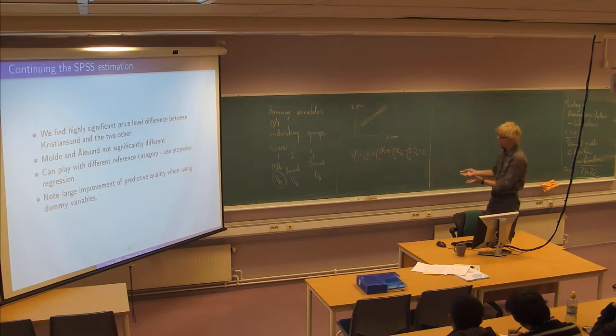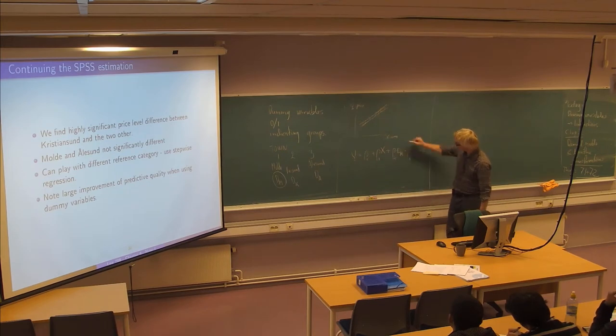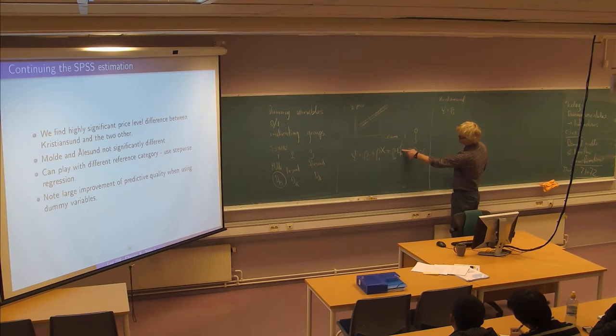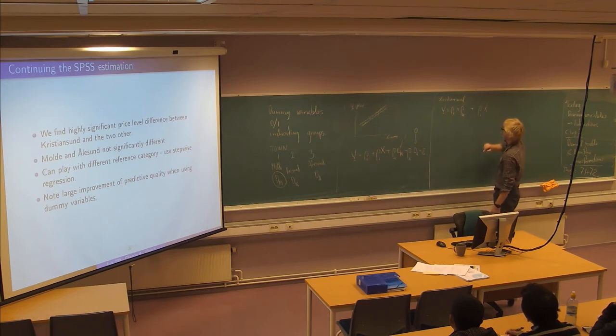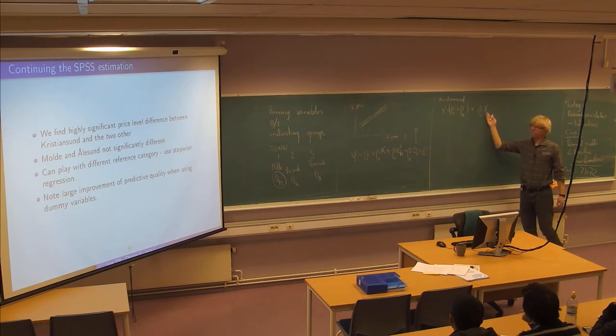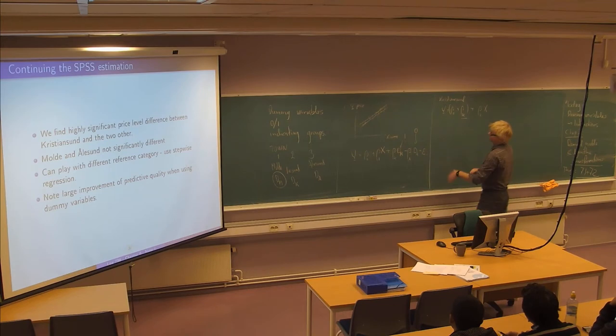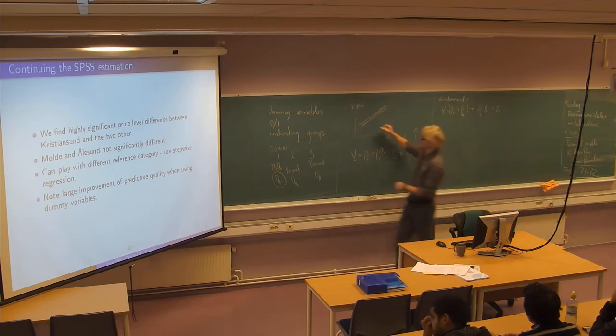Clearly what happens here is that suppose you have a flat in Kristiansund, then this one will be one and this one will be zero. So the model would read for Kristiansund, it will read simply y equal to beta 0 plus beta k times 1, which is beta k plus beta 1 times x. So you get the same linear model in x, but you shift the constant term with this amount, which we can estimate. So from the base market in Molde, you have beta 0 plus beta 1 x and then we shift to Kristiansund by a fixed amount for all flats.